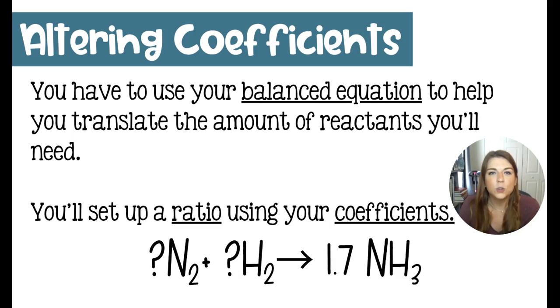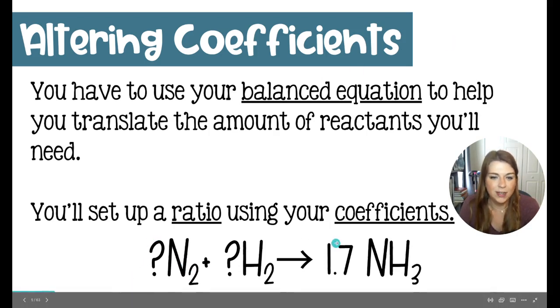But using a balanced equation, we are going to adjust the coefficients of everything else inside of this chemical equation to match up with what we want. And we're not actually going to write it in the equation. This is just saying, how many moles of nitrogen would we need or how many moles of hydrogen would we need? And we're going to make adjustments from there.